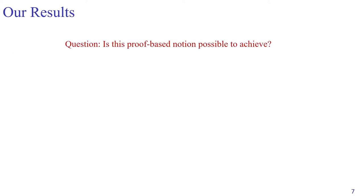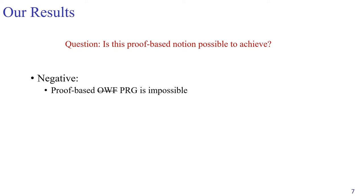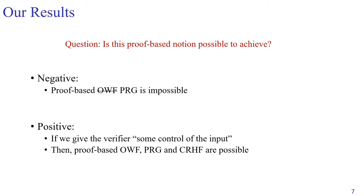Now, the question is: is this proof-based notion really possible to achieve? In this work, we provide results on both sides. On the negative side, we show that proof-based one-way function is impossible. Actually, due to some technical reasons, we are only able to show that proof-based PRG is impossible, but this is already strong evidence showing the limitation of the proof-based notion. Next, we show that if we give the verifier some control over the input, then the proof-based notion actually becomes possible. I'll explain later what we mean by some control over the input.